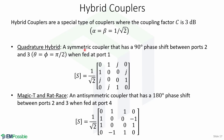There are two types of hybrids. The first type is the quadrature hybrid, which is a symmetric coupler that has a 90-degree phase shift between ports 2 and 3 when fed at port 1, and it's given by this scattering matrix. The Magic T hybrid and Rat Race hybrid are antisymmetric couplers that have a 180-degree phase shift between ports 2 and 3 when fed at port 4, and it's given by this scattering matrix.